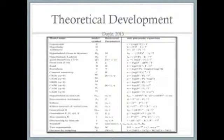This is where we get to see that all of the first 20 can be reduced. Doyle in 2013 reduced all of these to one common theoretical statement.